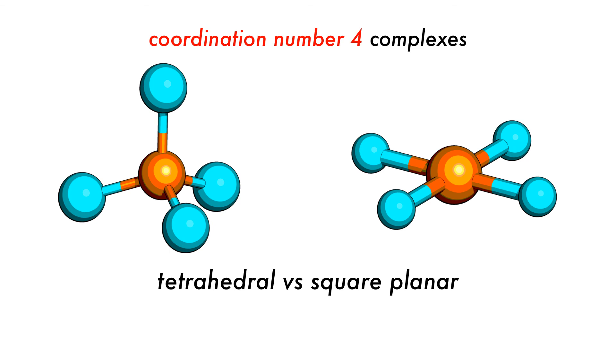Another common coordination number, four, has two common geometries, tetrahedral and square planar. It can be difficult to predict which one will form, as we cannot use VSEPR to predict these geometries and instead must rely on crystal or ligand field theory, which we will discuss later.